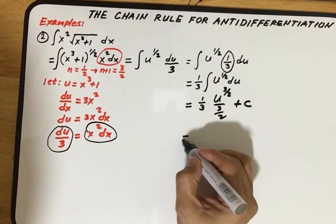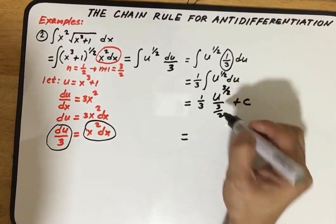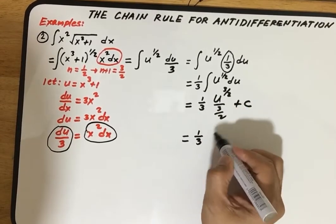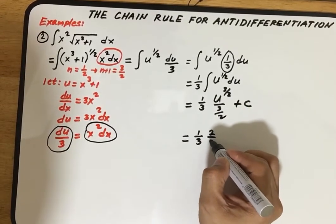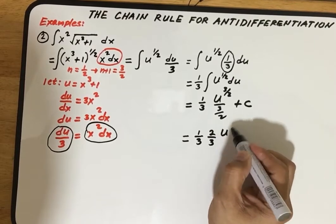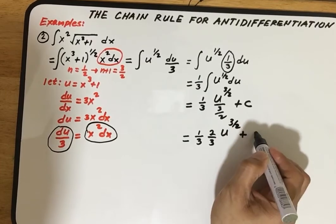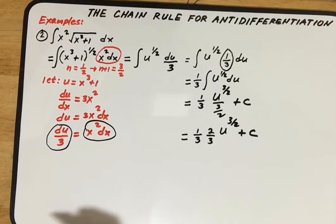From the rules of dividing fractions, we rewrite this as one-third times the inverted fraction, so two-thirds, then u to the three halves plus c.